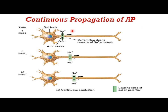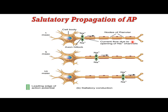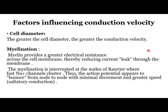In continuous conduction, the action potential starts at the axon hillock and travels along the whole axon. In myelinated fibers, the action potential is generated only at the nodes of Ranvier — this is called saltatory or jumping conduction. Conduction velocity depends on cell diameter and myelination: the greater the diameter, the greater the conduction velocity, and myelinated fibers are faster than unmyelinated fibers.